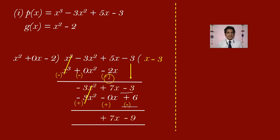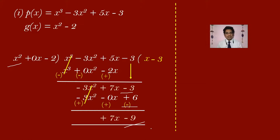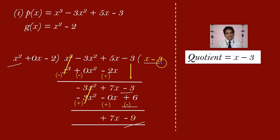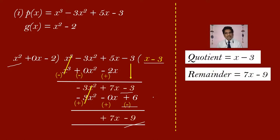What is the degree of the divisor? It is x power 2. The remainder's degree must be less than the divisor's degree, so the division ends here — just like with numerical values, the remainder is always smaller than the divisor. The quotient is x minus 3, and the remainder is plus 7x minus 9, which you can write as 7x minus 9. This is the end of the first problem.